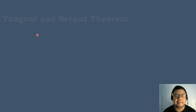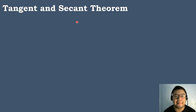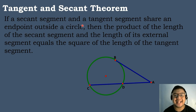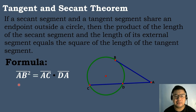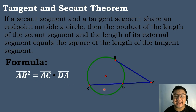Let's have our last theorem: the Tangent and Secant Theorem. If a secant segment and a tangent segment share an endpoint outside a circle, then the product of the length of the secant segment and the length of its external segment equals the square of the length of the tangent segment. The formula is: segment AB squared equals segment AC times segment DA.